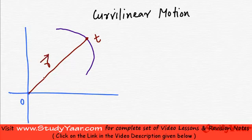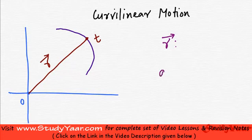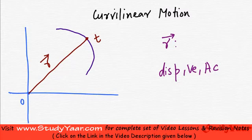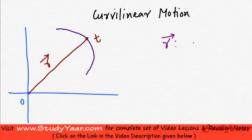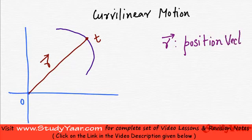It is also known as the position vector of this particular point. So r vector — we know displacement, velocity, and acceleration are all vectors, just like our force. So r, which is displacement, is also known as position vector because it defines the position of your particle. This is my position vector.